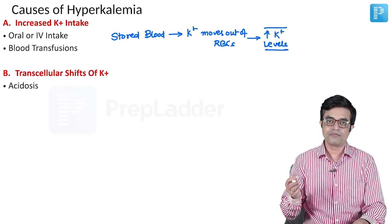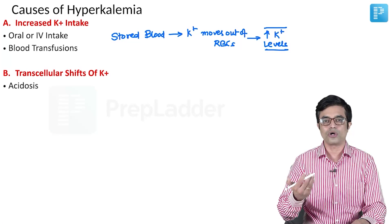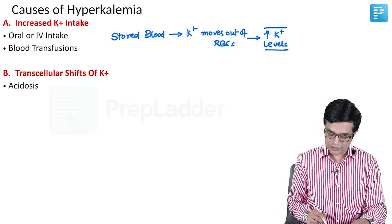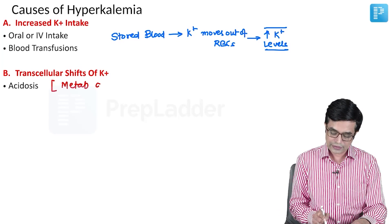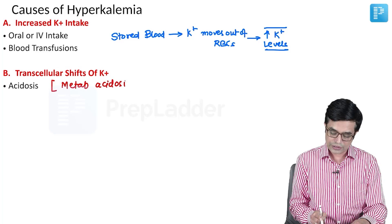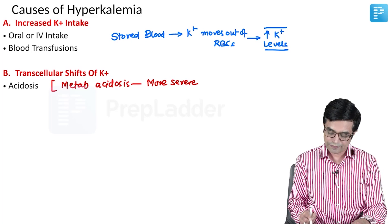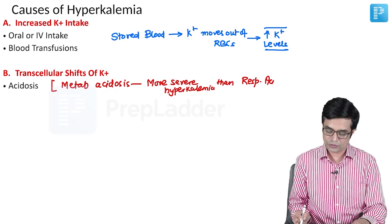Acidosis causes shifting of potassium to the outside. Whether it is metabolic acidosis or respiratory acidosis, hyperkalemia can occur in both of them. But Nelson also says that metabolic acidosis causes more severe hyperkalemia than respiratory acidosis. So it is metabolic acidosis which is a bigger, stronger culprit.